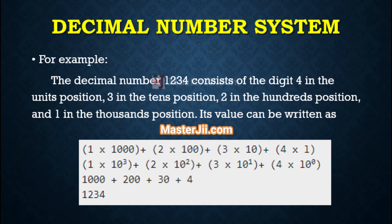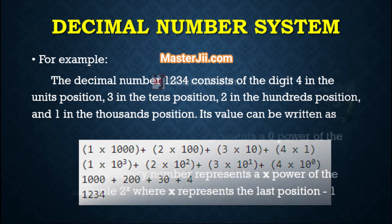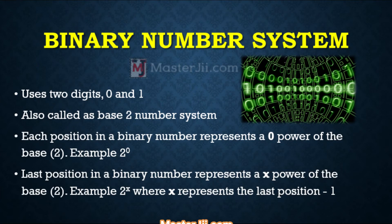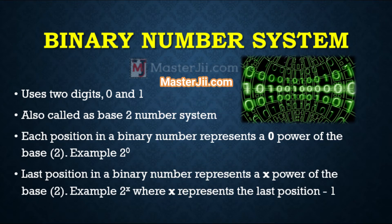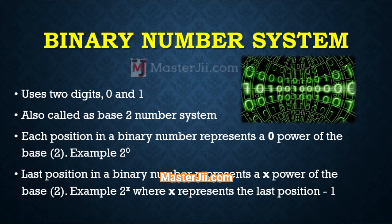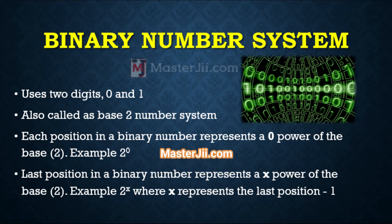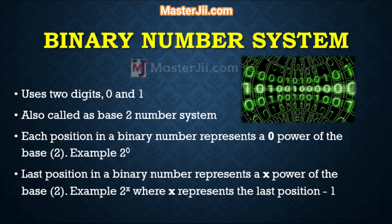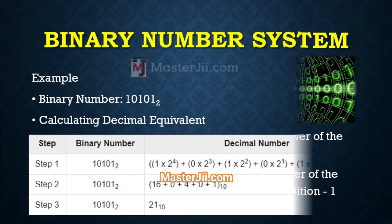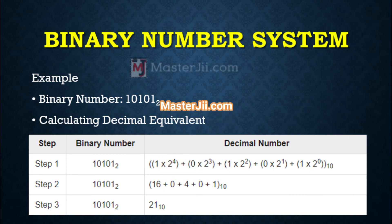Characteristics of the binary number system include: it uses two digits, that is zero and one, also called the base-2 number system. Each position in a binary number represents a power of the base 2 — for example, 2 raised to the power 0 for the last position, and 2 raised to the power x, where x represents the last position minus 1. For example, given the binary number 10101 with base 2, we can calculate its decimal value accordingly.